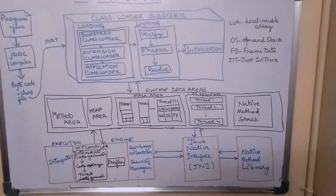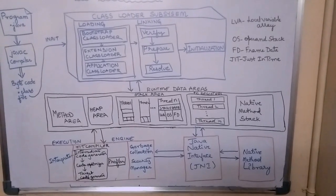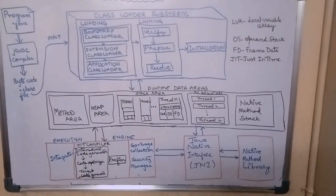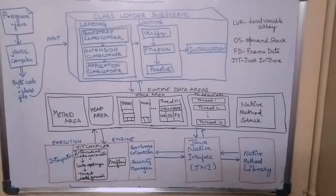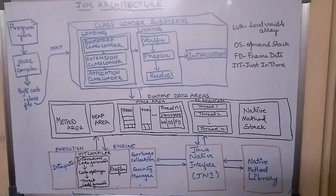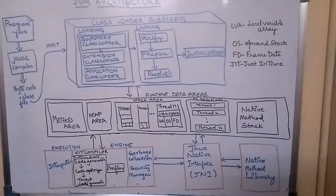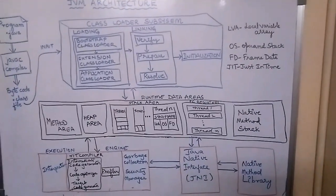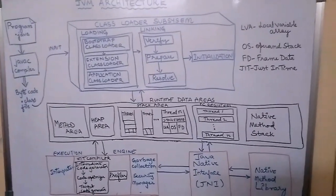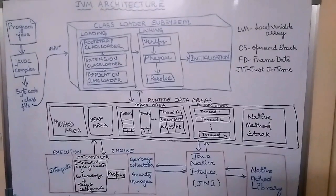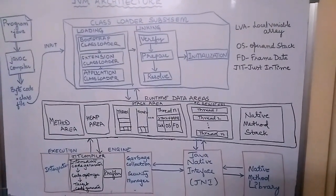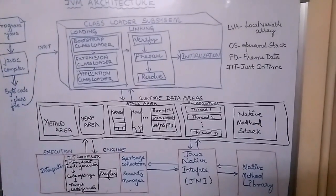JVM is comprised of three components: the first one is the class loader, the second one is the runtime memory areas, and the third one is the execution engine. The execution engine is like the heart of JVM — it is similar to the CPU of the computer. All the execution takes place in the execution engine. Now we will see each part and its tasks.